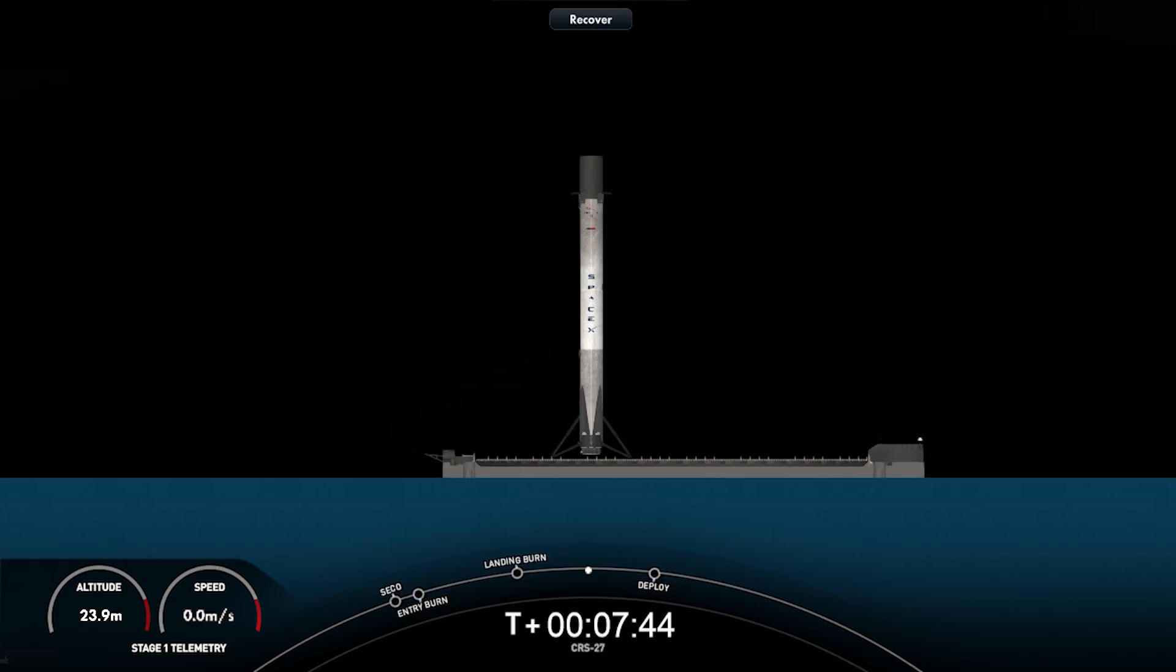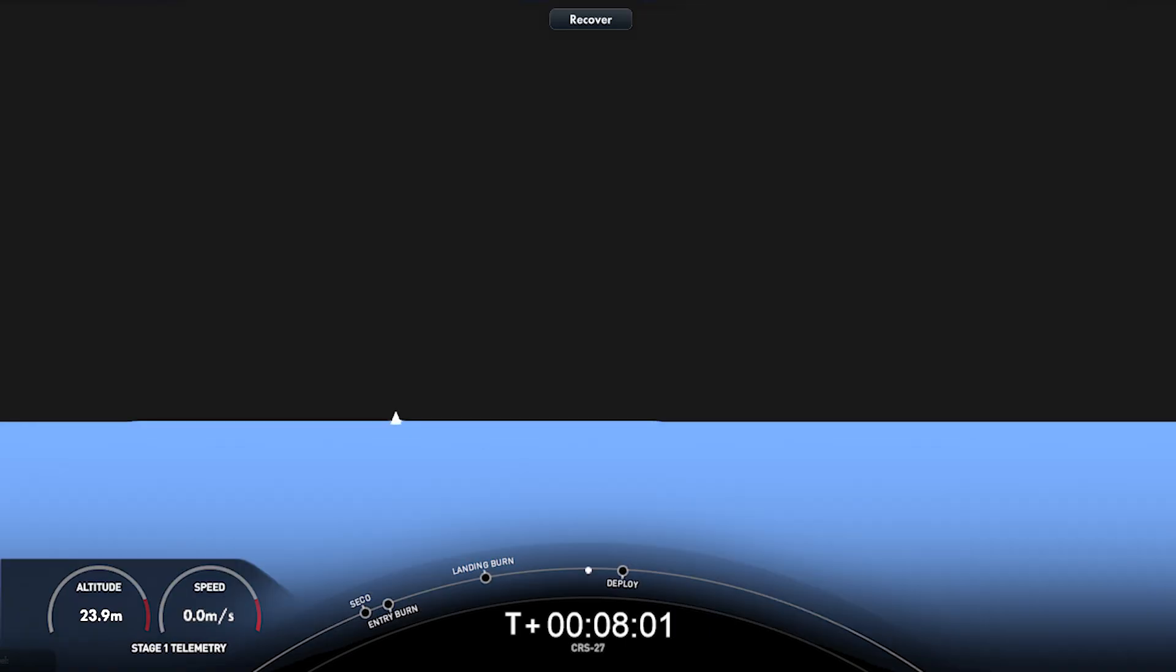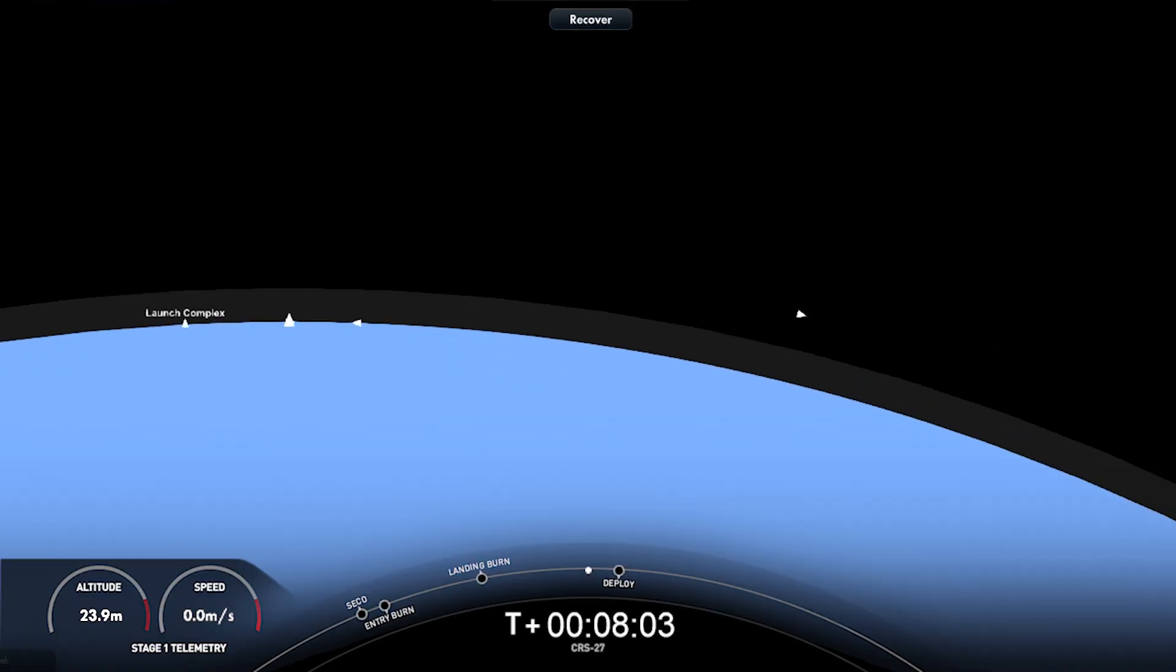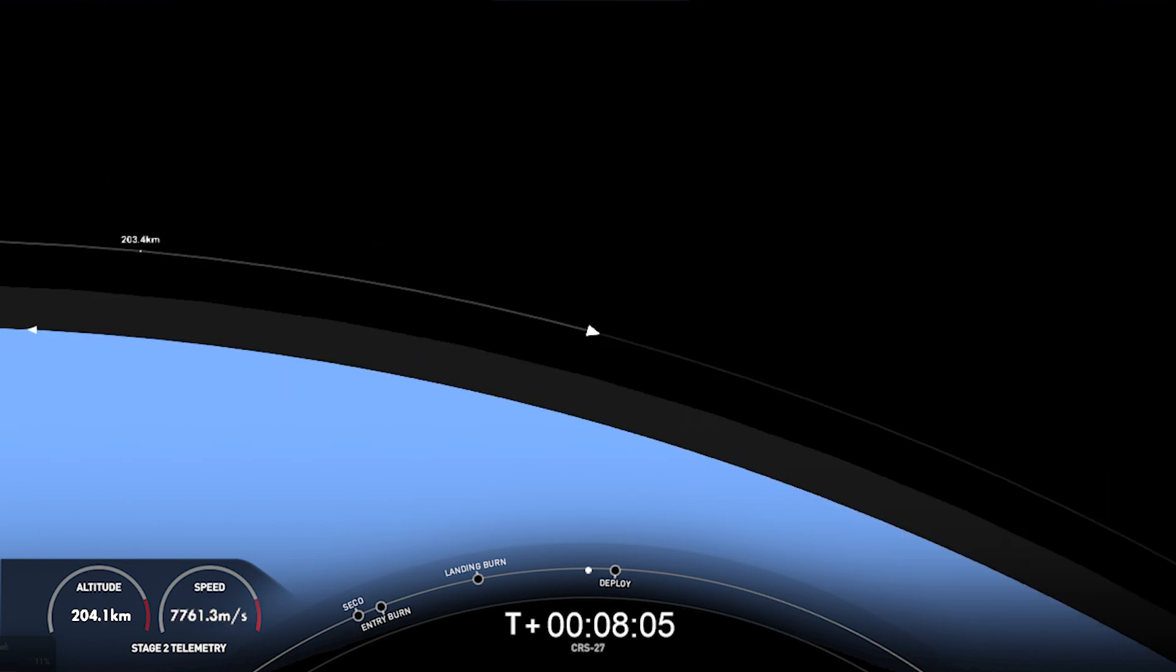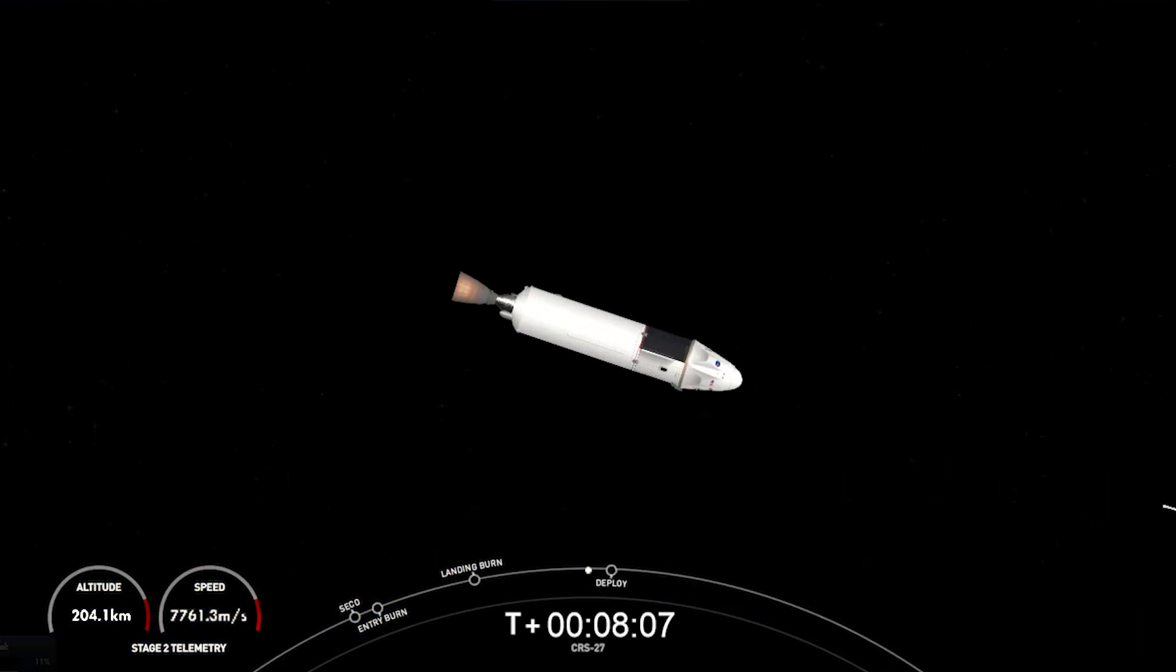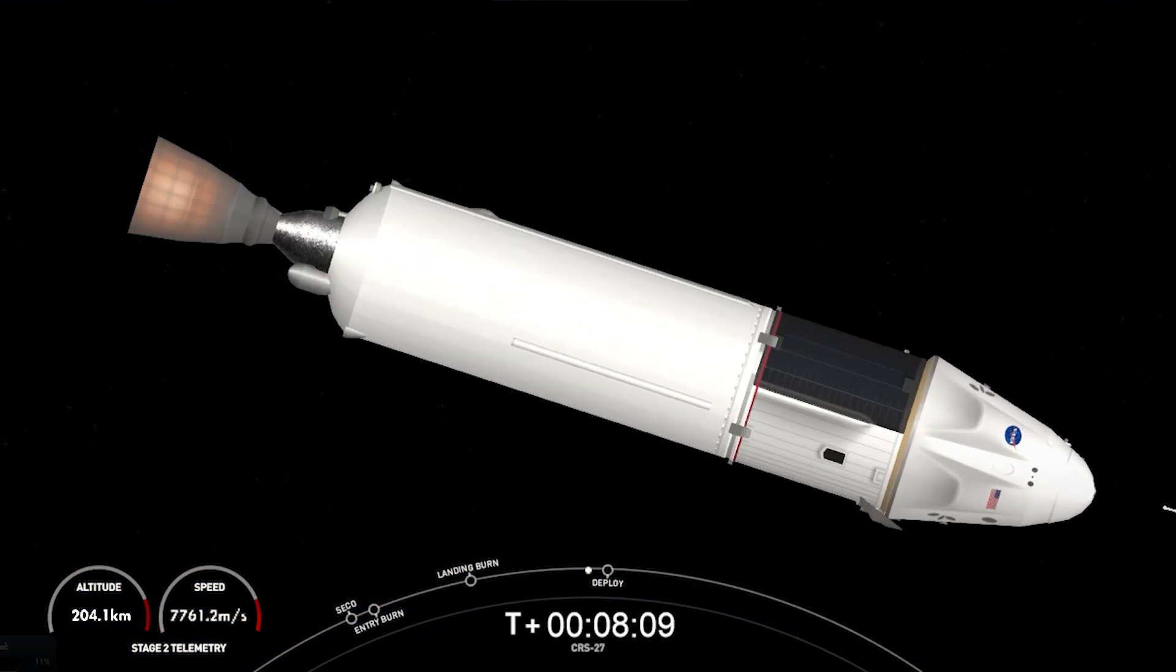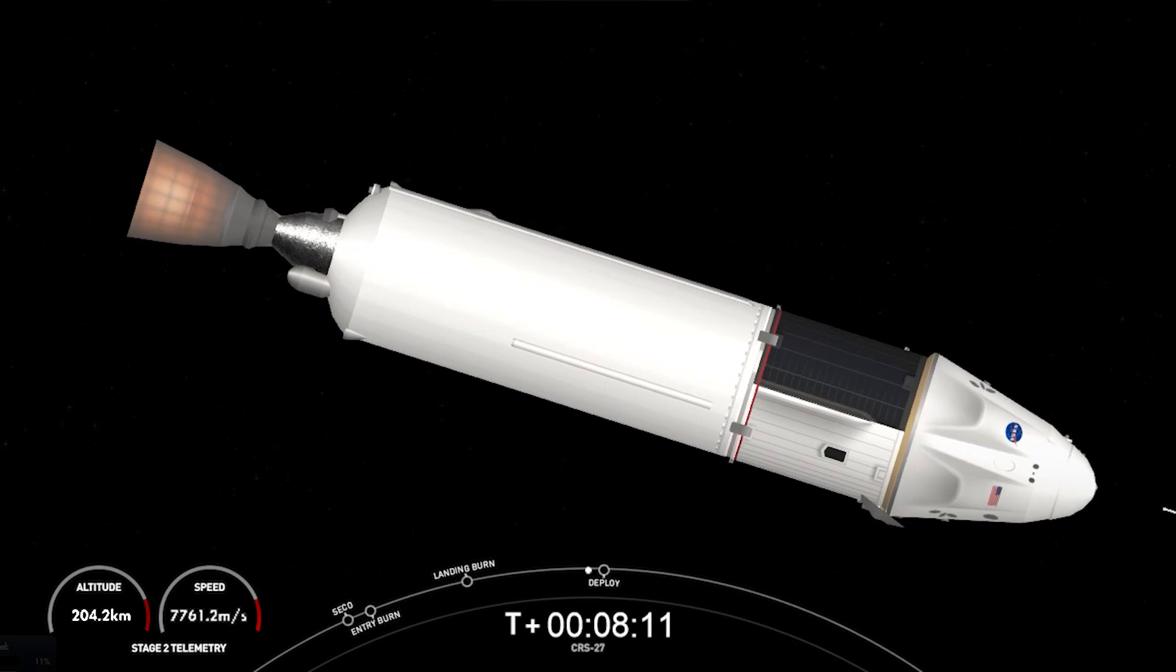The Falcon 9 first stage that supported today's mission landed for the seventh time, having previously supported Amazonas Nexus, SES-22, iSpace's Hakuto-R Mission 1, and three Starlink missions. Today's landing also marks the 178th successful landing for an orbital class rocket. We are coming up on the last major task for stage two, commanding separation of Dragon a couple minutes from now. We expect to have video of Dragon's separation from the top of the second stage, which looks into the trunk.